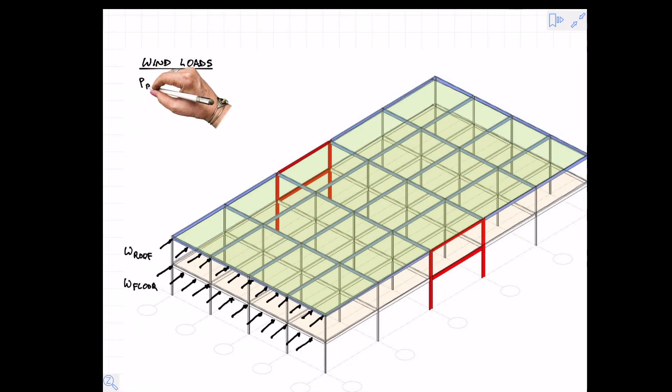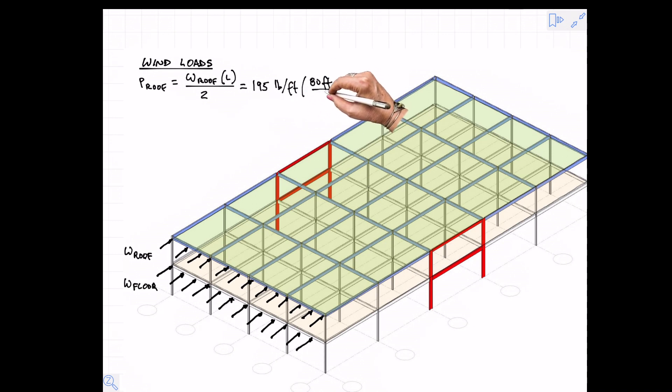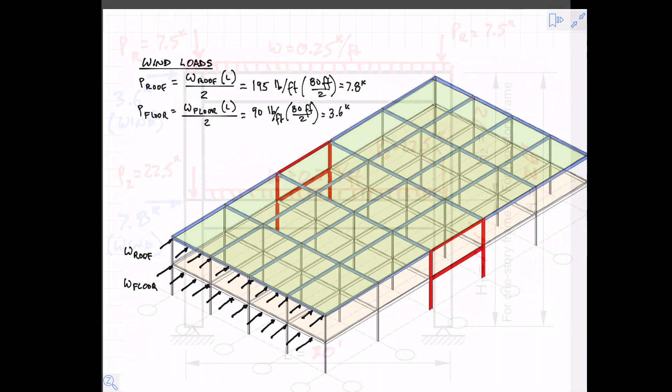These then become concentrated loads at the roof level and the floor level and we calculate that just like a beam: the end reaction of a uniformly loaded beam is WL over 2. So we get 7.8 kips at the roof and 3.6 kips at the floor level. So these are the loads that then we transfer onto our frame diagram.